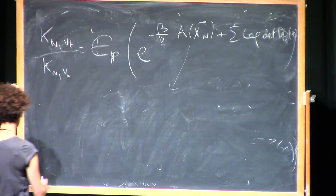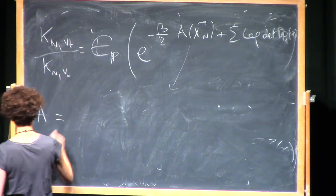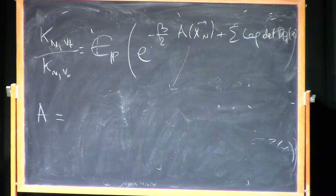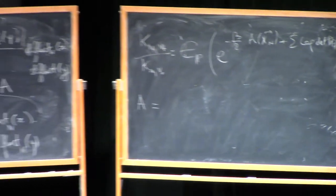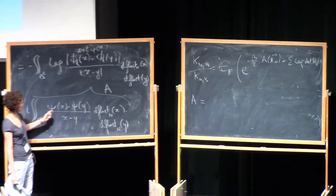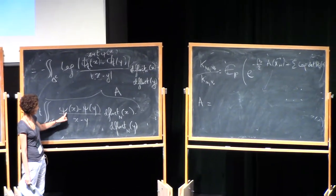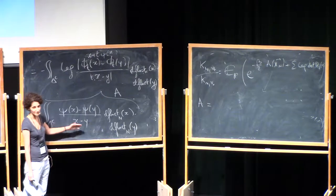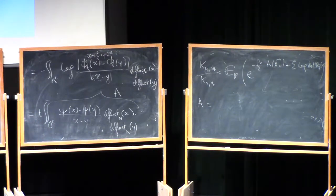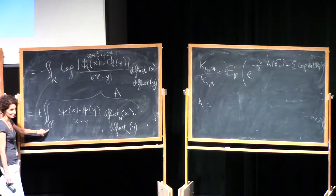So I look at this term, this a, and I observe that what I'm integrating here is a function. Psi of x minus Psi of y over x minus y, which is actually regular if Psi is c1 or c2. Because when x goes to y, this will go to the derivative of Psi. So this function is actually regular, but I'm integrating in the complement of the diagonal.